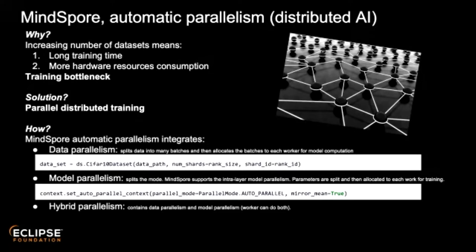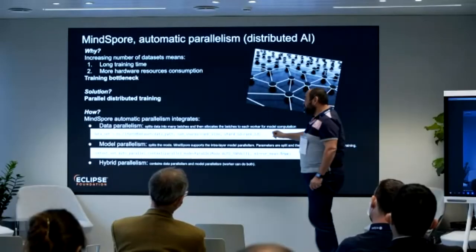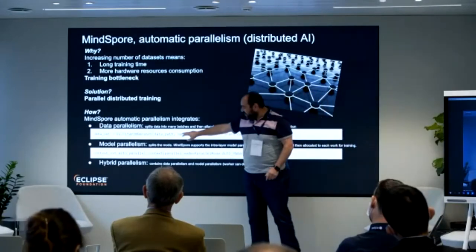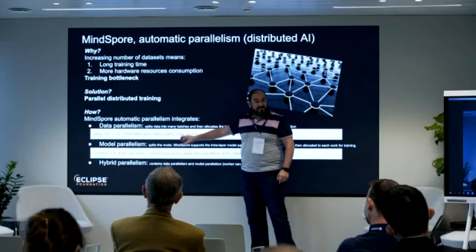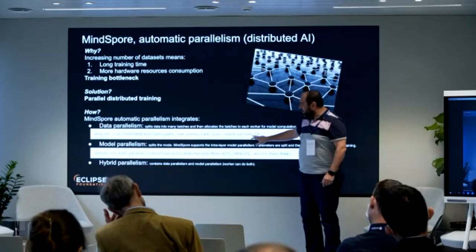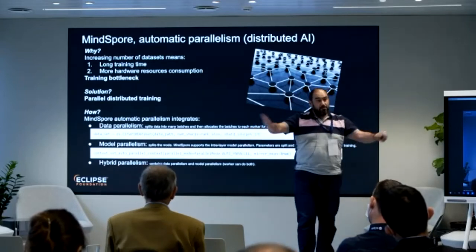The first level is data parallelism. If your dataset is very large, instead of processing it on a single machine, you spread it across different machines using what's called sharding. In the code, you use the MindSpore dataset API and provide the shard size and number of shards, which are then spread across machines.